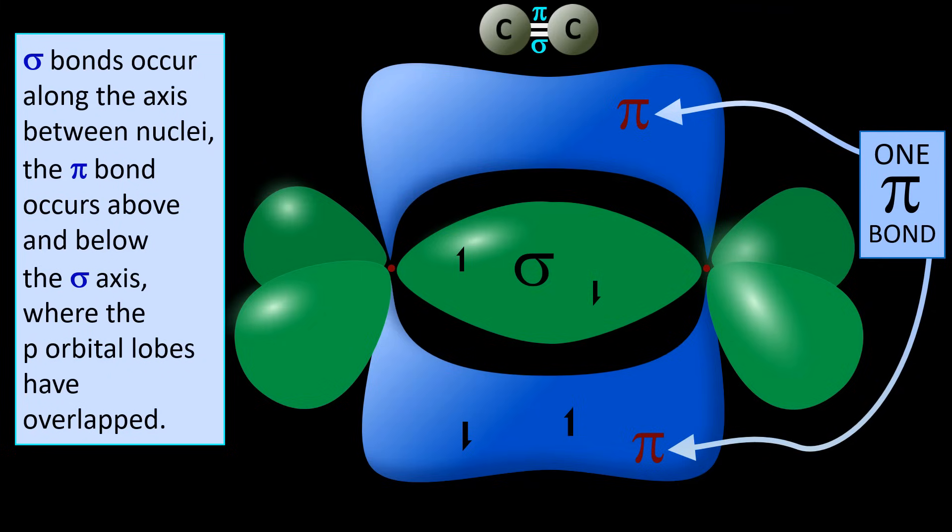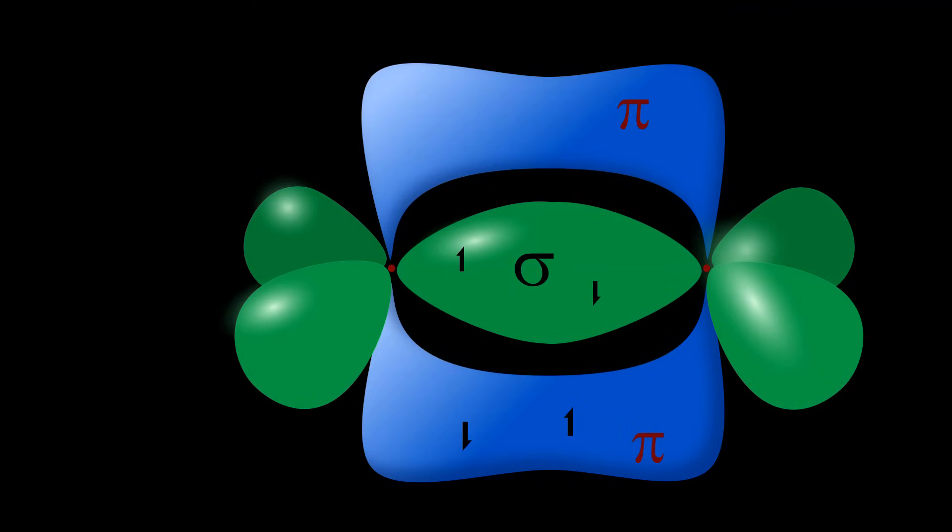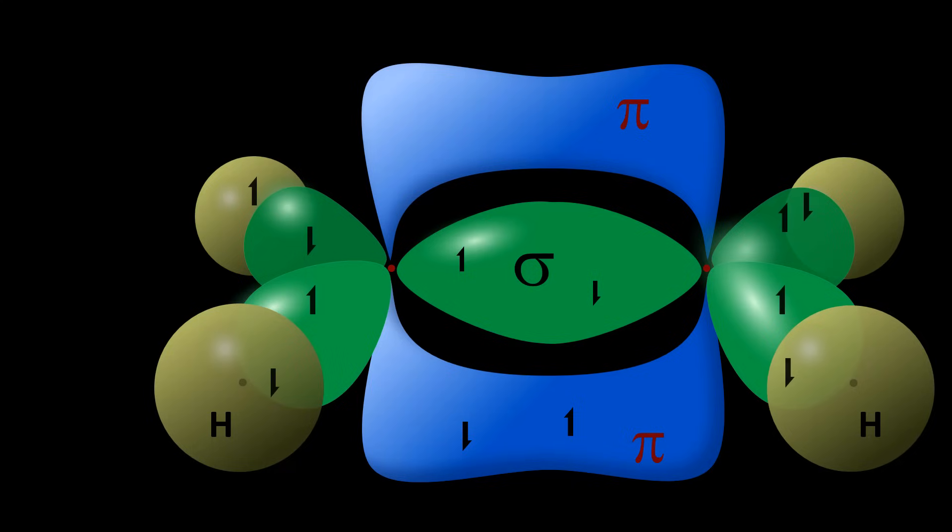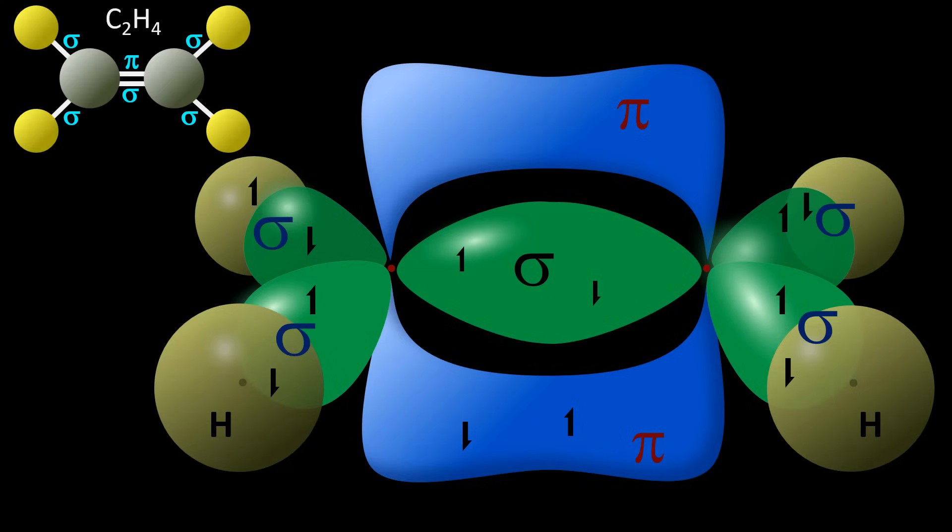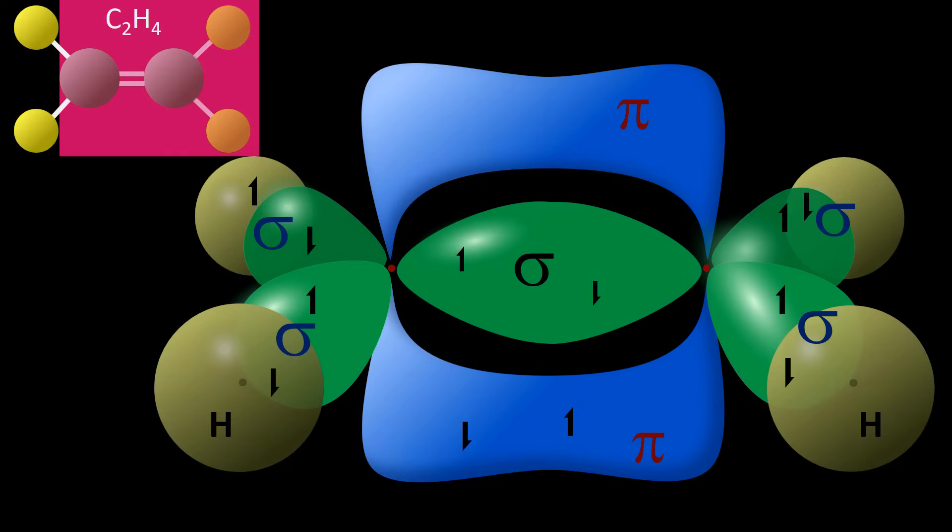The ball and stick model shows this double bond with two dashes. To summarize, sigma bonds occur along the axis between nuclei. The pi bond occurs above and below the sigma axis where the p orbital lobes have overlapped. The ethene molecule also bonds to four hydrogen atoms by overlapping with both carbon's other 2sp2 hybrid orbitals, creating four more sigma bonds. In the ball and stick model, we can readily see that each carbon has a trigonal planar geometry and thus the whole molecule exists in a plane with a single pi bond above and below that plane.